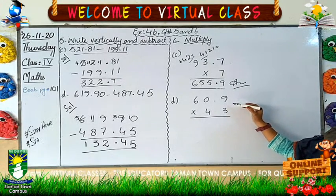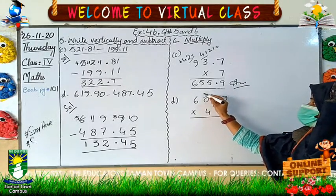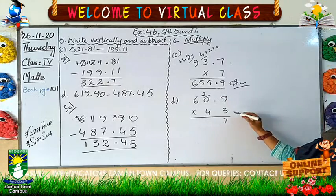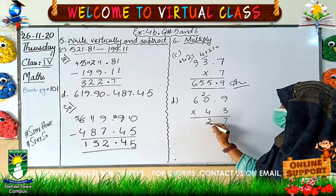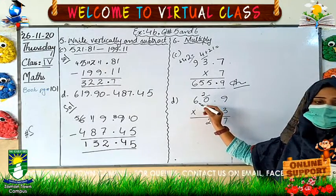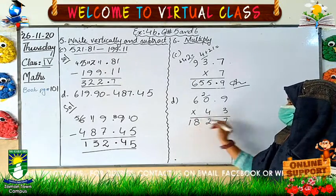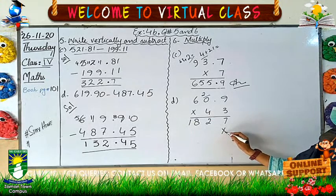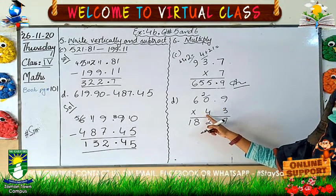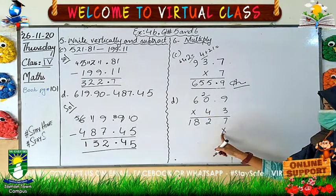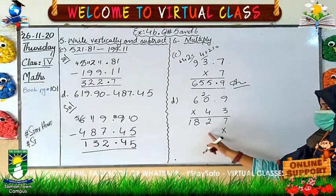3 nines are 27. 2 is here. 3 zeros are zero, so I will write the same and carry my 2 here. 3 sixes are 18. When I start to multiply with the next multiplier digit, I have to take the mark of multiplication here and start to write on the next line.